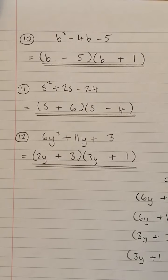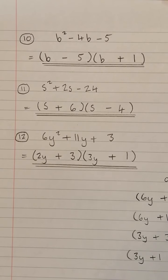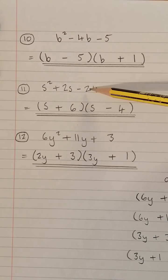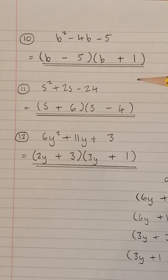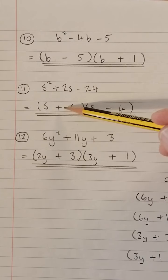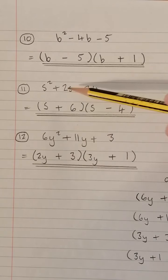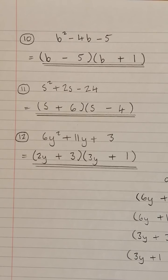Question 11, S² + 2S - 24. So numbers multiply to give -24 and add to give positive 2. Positive 6 times -4 gives -24. Positive 6 or 6 - 4 gives 2. There we have it there.